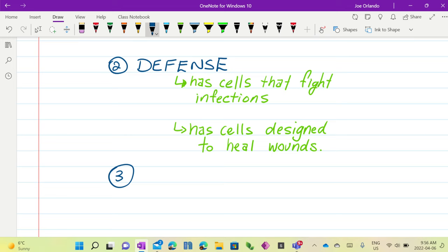If you get cut, what happens? You get the blood clotting at the wound site to stop loss. So we also have cells that are designed to heal wounds. Blood has a third function. I have hypertension, I have high blood pressure, which means my heart pumps a little bit harder than it probably should.